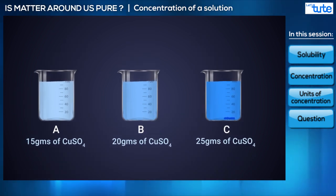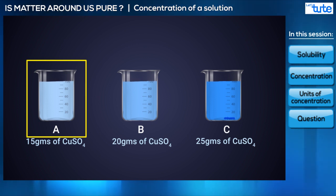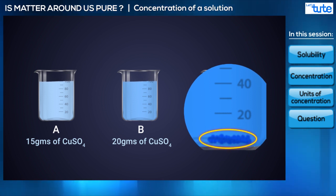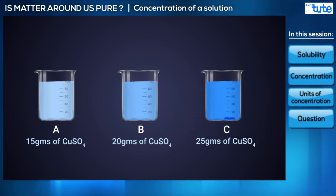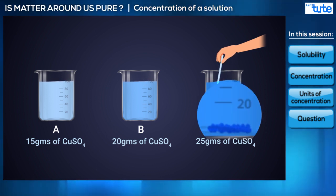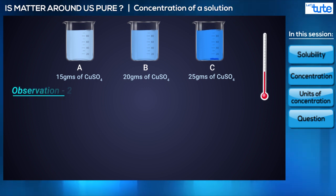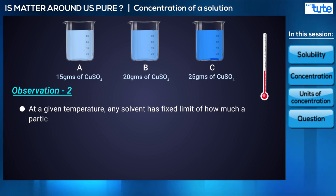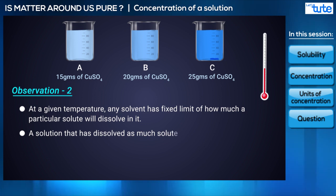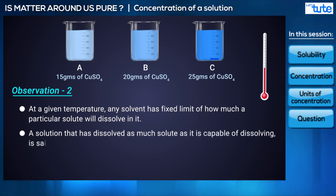The second observation is that in beakers A and B, copper sulphate has dissolved completely, while in C we find a few particles of copper sulphate settled at the bottom. No matter how much we stir, this small amount of copper sulphate in C will not dissolve. This is because at a given temperature, any solvent has a fixed limit of how much of a particular solute will dissolve in it, and the water in beaker C is past this limit. A solution that has dissolved as much solute as it is capable of dissolving is said to be a saturated solution.